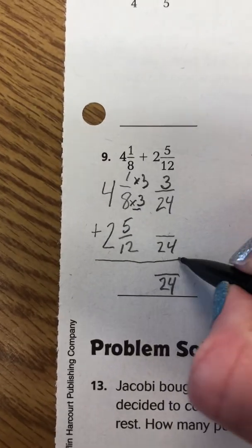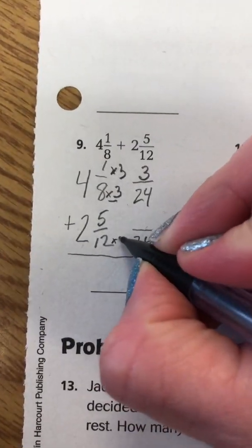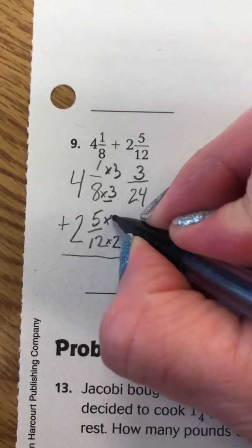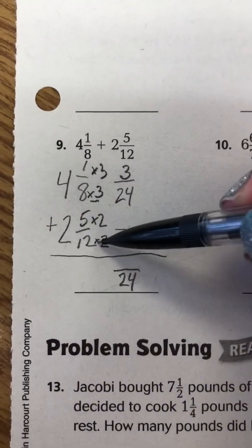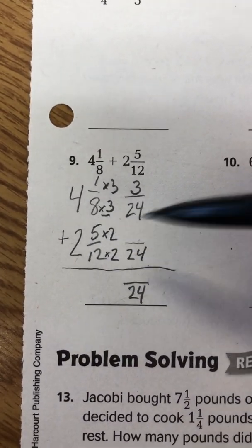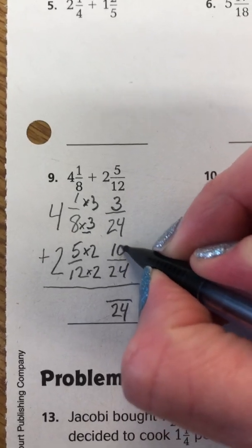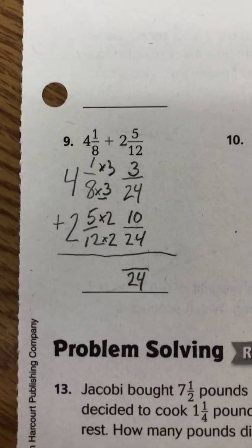What did we multiply 12 by to get 24? We multiplied it by 2. So do the same thing to the top. So since the bottom was 12 times 2, at the top, we're going to do 5 times 2, which is 10. So 5 twelfths becomes 10 twenty-fourths.